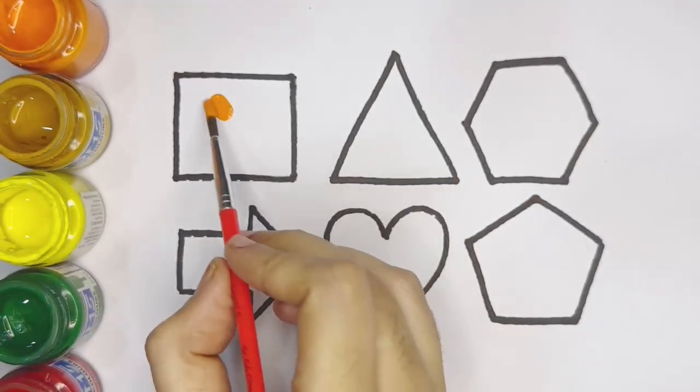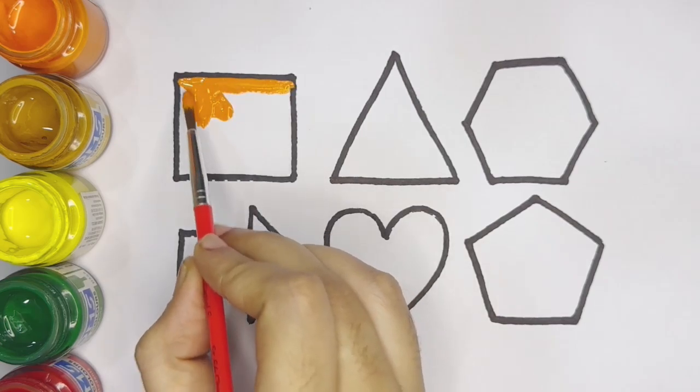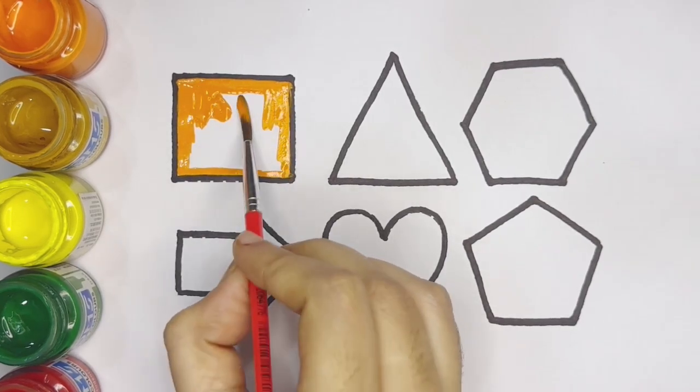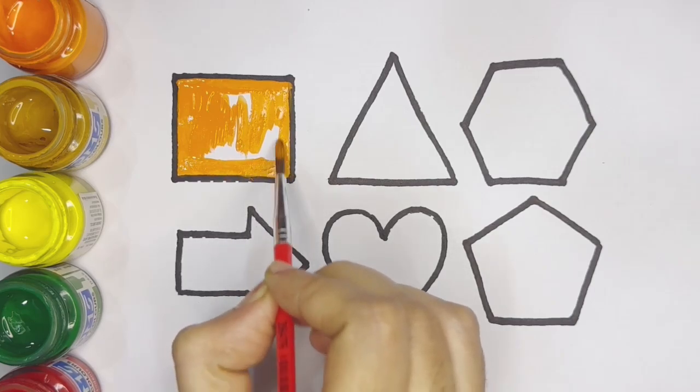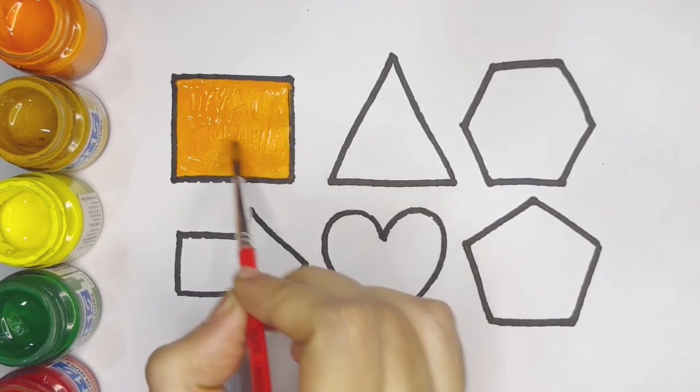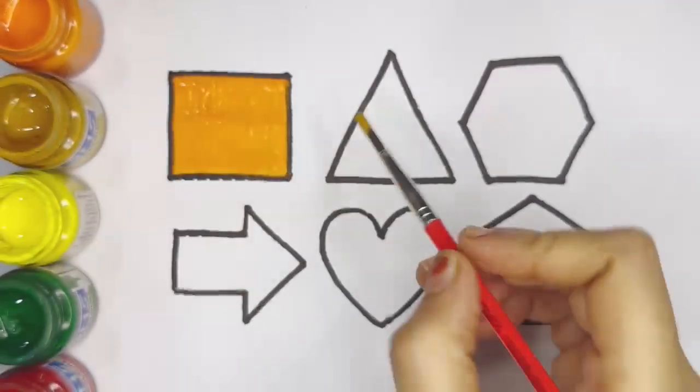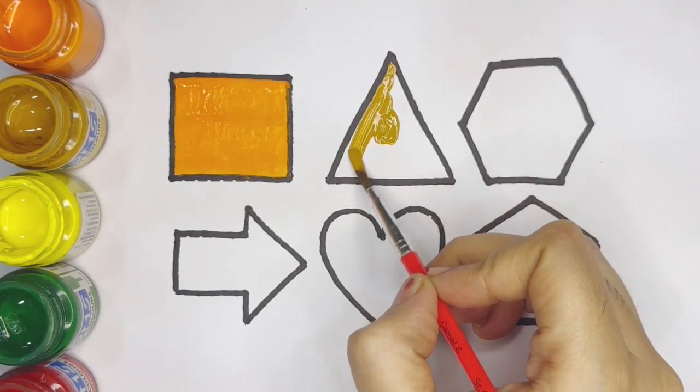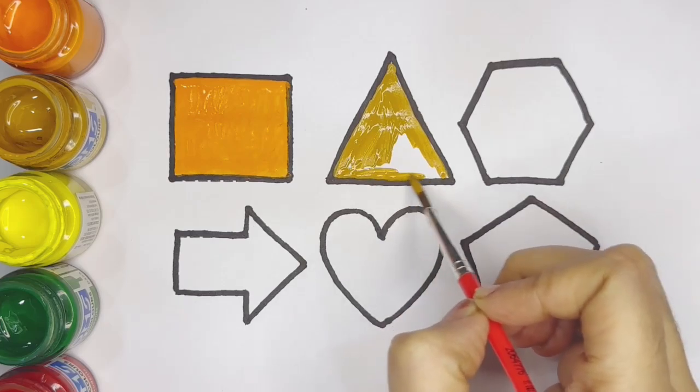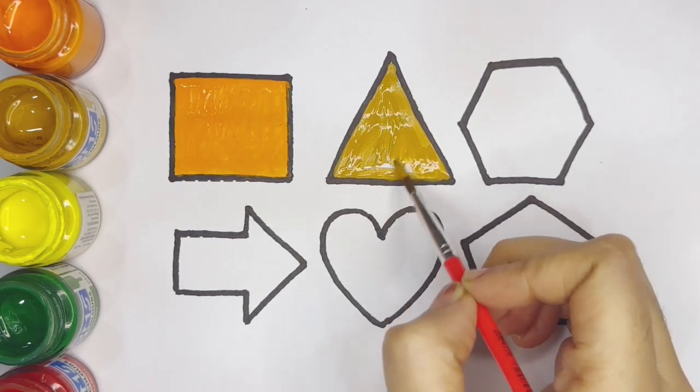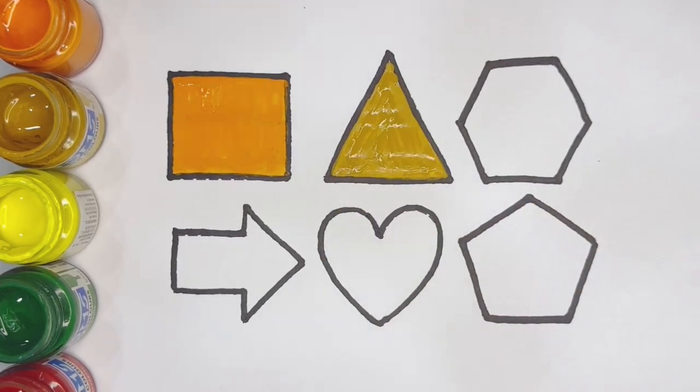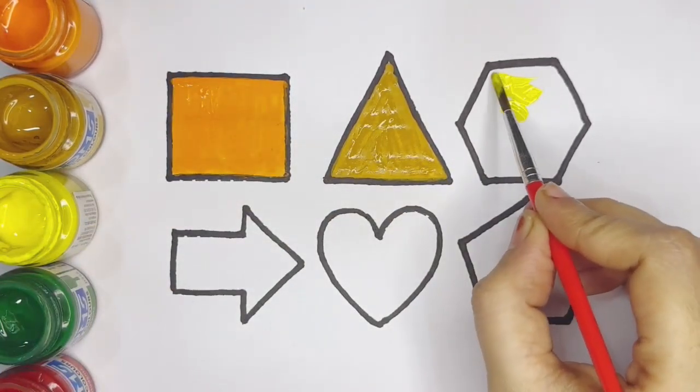Now let's paint the shapes. Square, orange color. Golden color, triangle. Yellow color, hexagon.